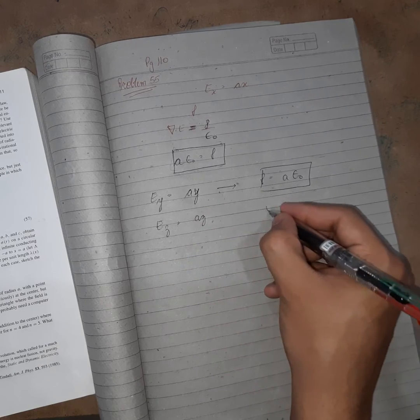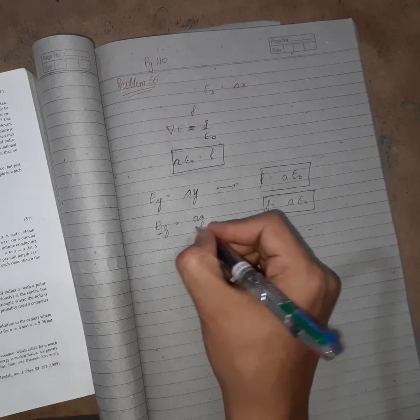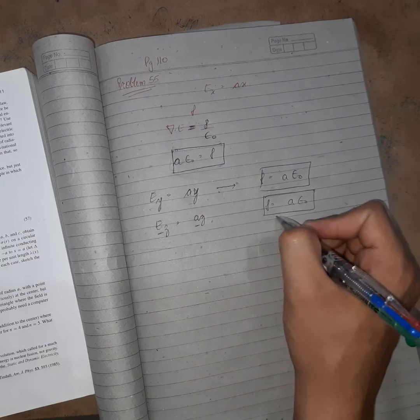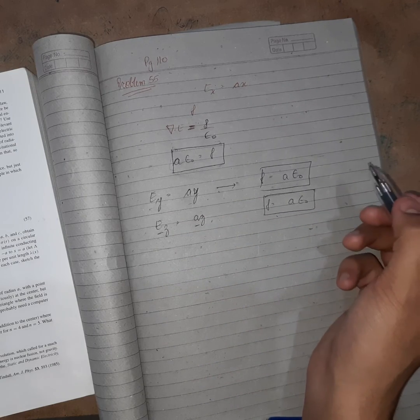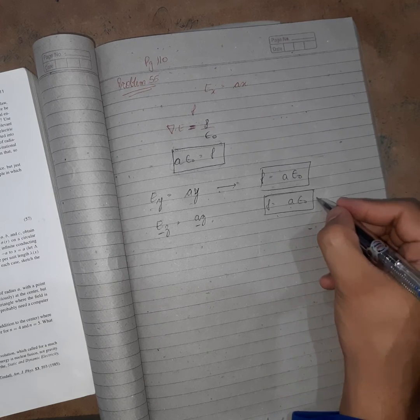Similarly for Ez also, for Ez, az is given and rho is coming there. So for different directions of electric field, rho is constant, rho is uniform.